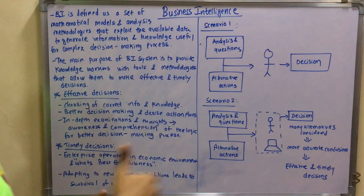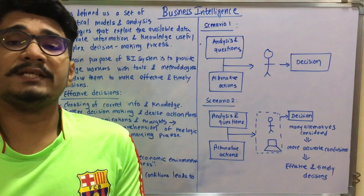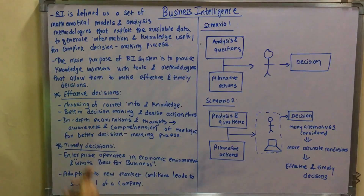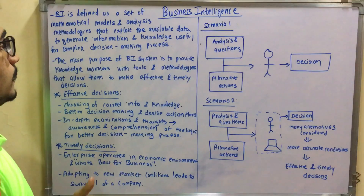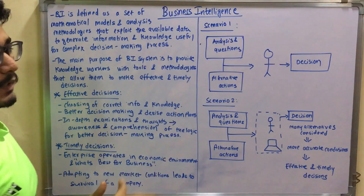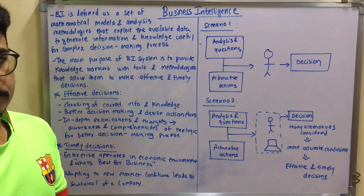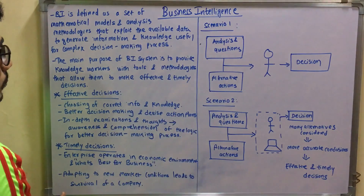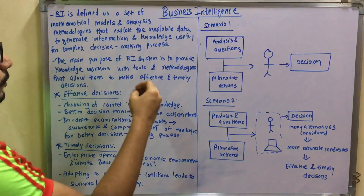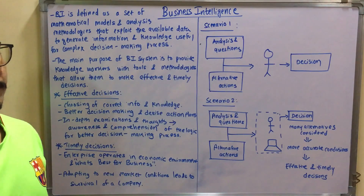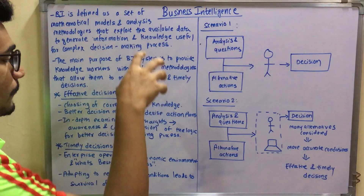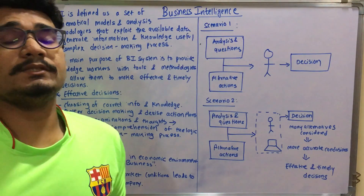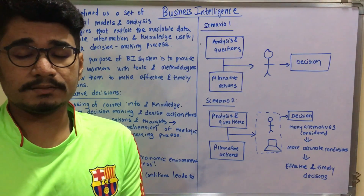Primarily, BI is used to provide knowledge workers — the people who are the decision makers — with the tools and methodologies that allow them to make more effective and timely decisions. In business intelligence, effective decisions and timely decisions are the two most important things to consider.